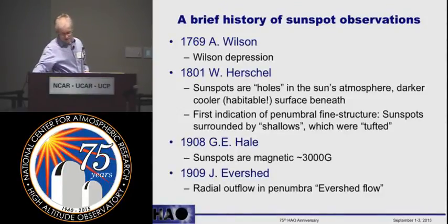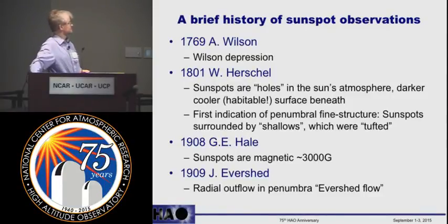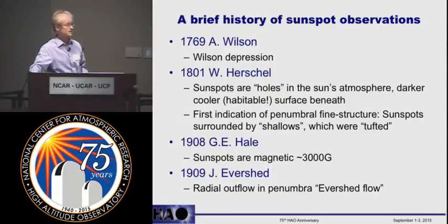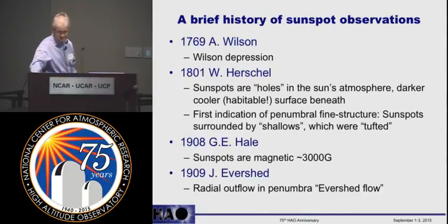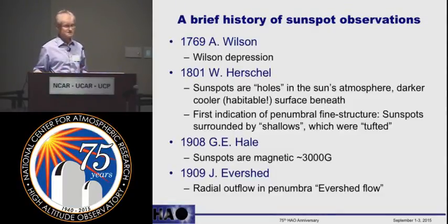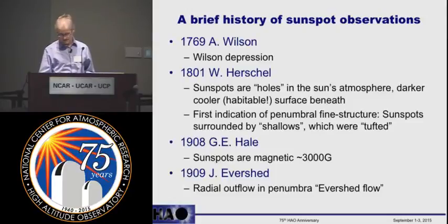The two landmark observations which really taught us about the physical structure of sunspots were done in the early 1900s. Hale showed that sunspots are magnetic with quite substantial strength of 3,000 gauss — for comparison, the Earth's magnetic field is about half a gauss. And the year after, Evershed saw a systematic line shift of spectral lines in the penumbra, which he correctly interpreted as a systematic flow away from the center of the sunspot, showing that the presence of a sunspot has dynamical consequences on plasma motions.